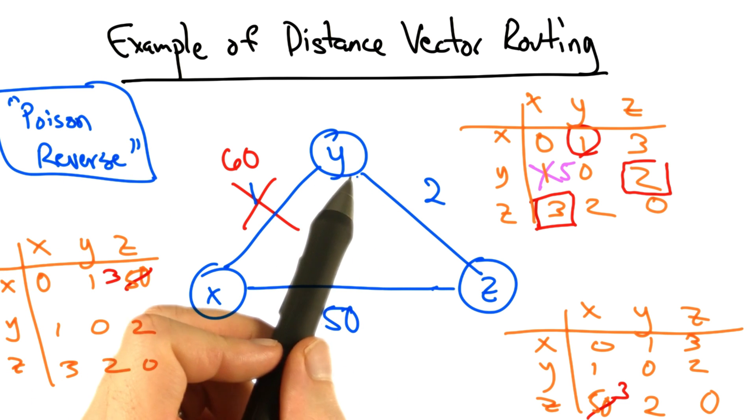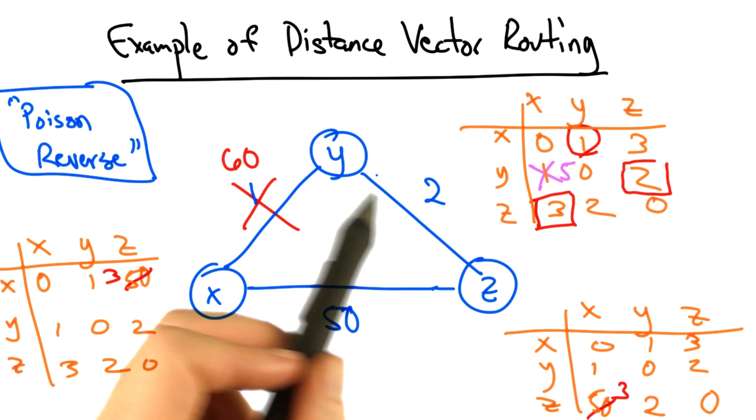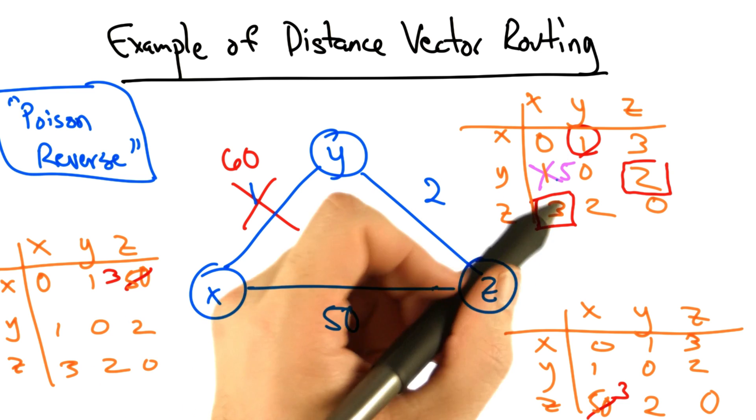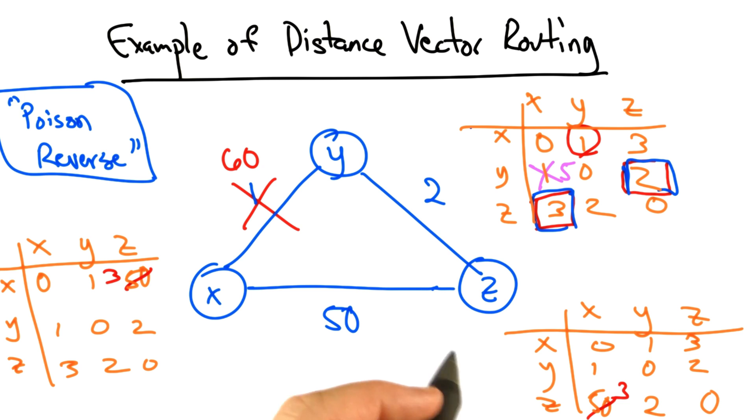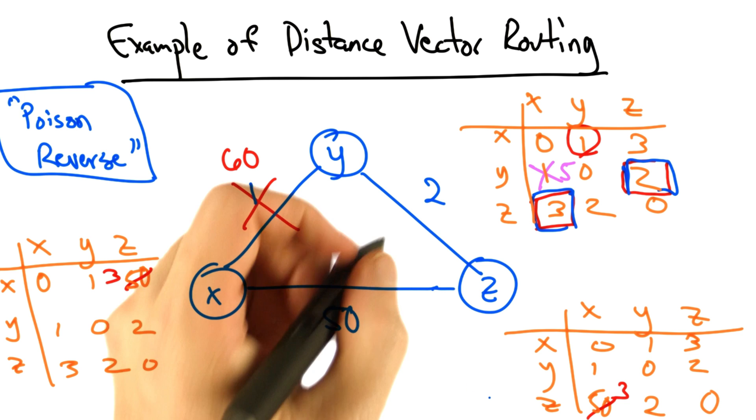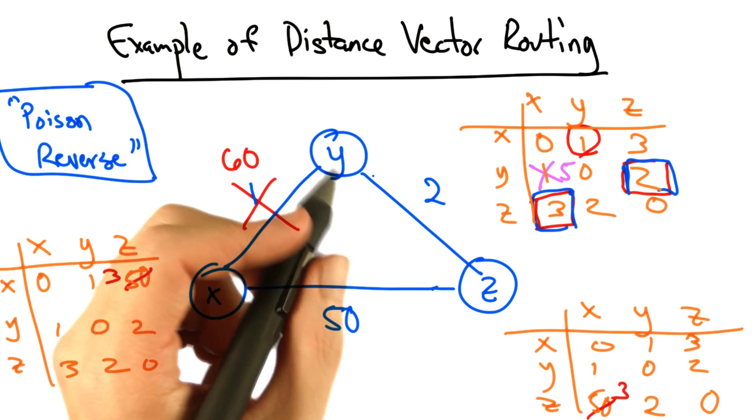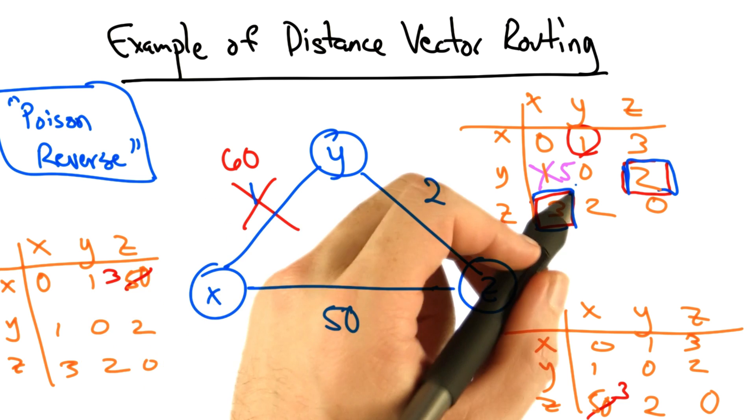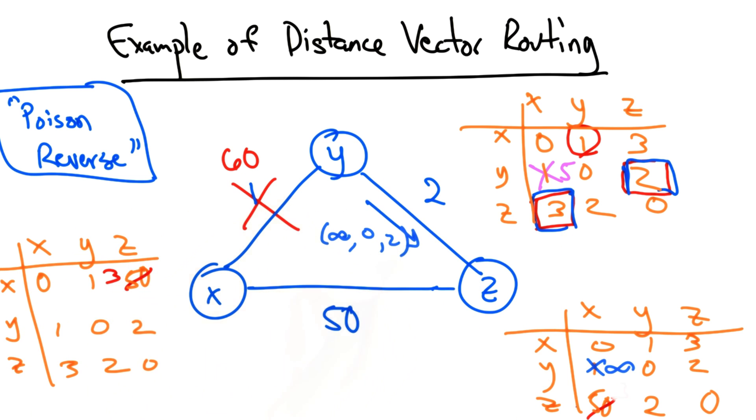The idea here is that if y must route through z to get to x in its table, as it did here, then y advertises an infinite cost for the destination x to z. So instead of sending 5, 0, 2, y would send infinity, 0, 2. This would thus prevent z from routing back through y, and immediately it would choose the shortest path to x of path cost 50.